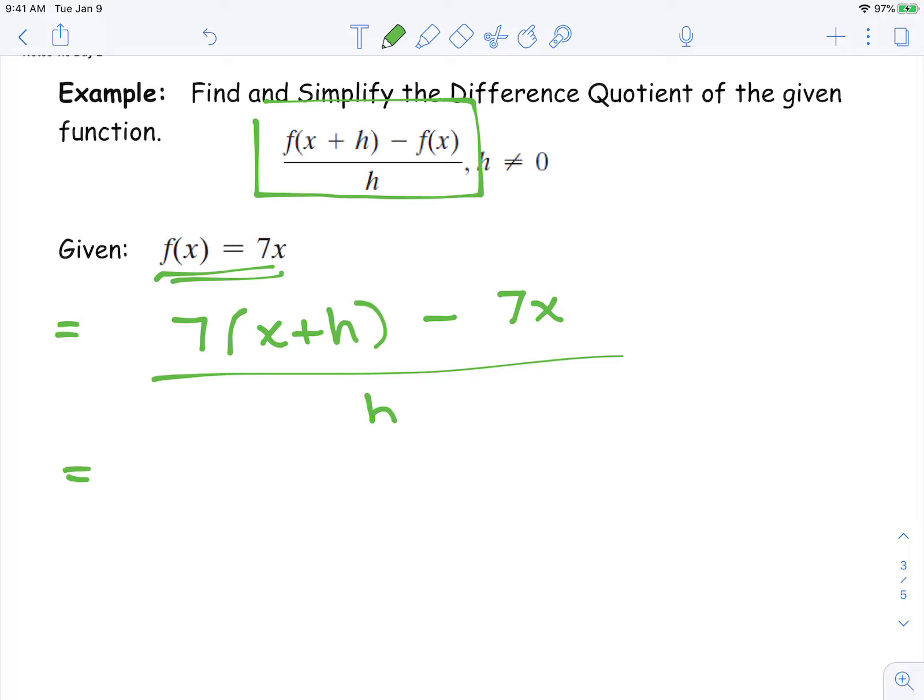Now we're going to simplify it. So we're going to distribute this 7 into that binomial, then subtract 7x over h. Continue simplifying. 7x minus 7x becomes 0. We have 7h over h. Then you can reduce by a common factor of h. So the final answer is 7.